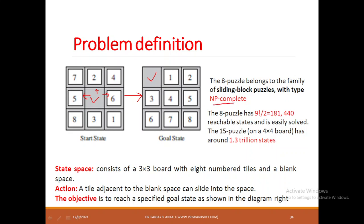The number of reachable states for the 8-puzzle is 9 factorial divided by 2, which equals 181,440 different reachable states. For the 15-puzzle problem, which is a 4×4 board, there are 1.3 trillion states. This is a toy problem that belongs to NP-complete.